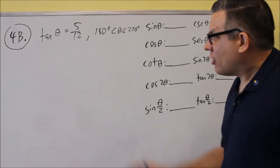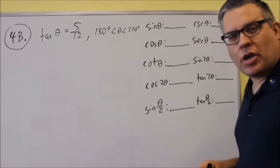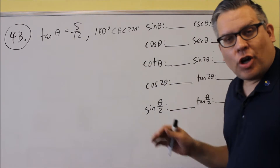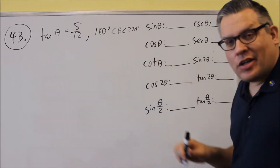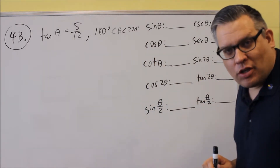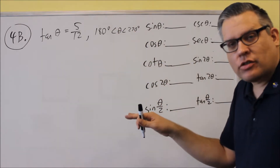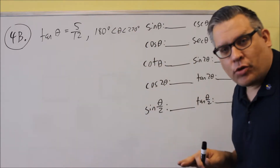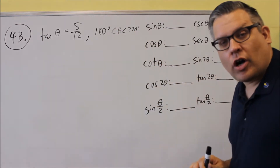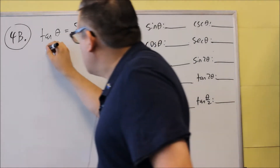For 4b, another one where we want to find all this information. We want to start out by drawing the triangle. This one tells us exactly what quadrant it's going to be in, so we don't have to use the All Students Take Calculus like we did for the previous one. It tells us what quadrant — we're in quadrant number 3 based on this.